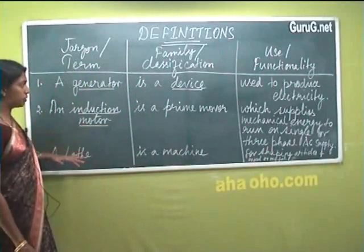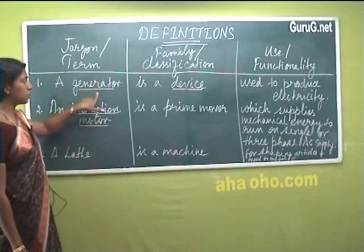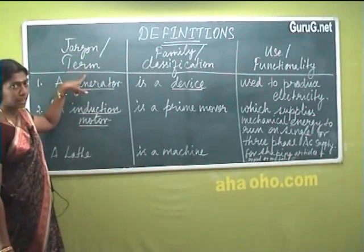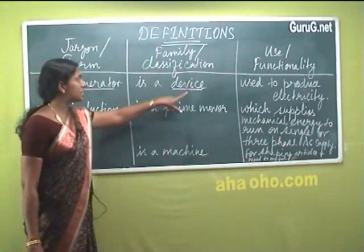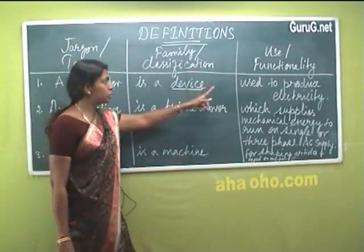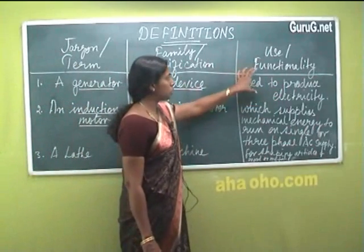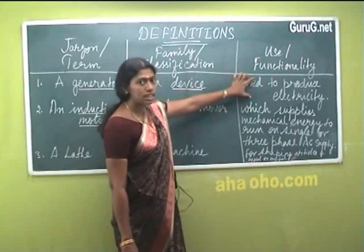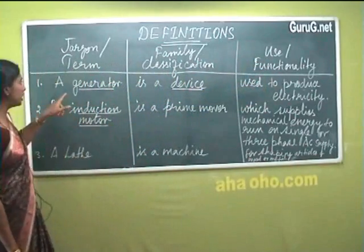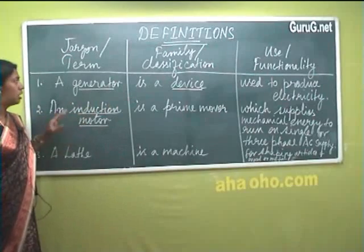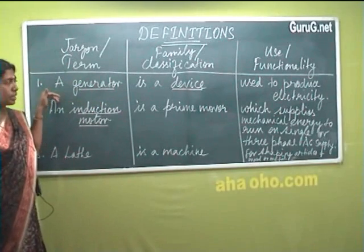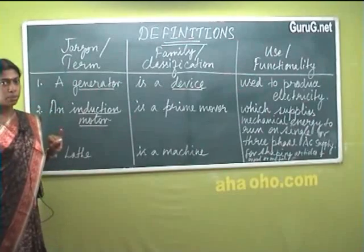Let us go through the examples. Let us take the word 'generator.' A generator — we have given the term here, which belongs to probably mechanical jargon. 'Device' is the classification; we are classifying this term. A generator is a device used to produce electricity. So I am giving the usage — for what the generator is used. A person who does not understand what a generator is will easily understand now, because we have given it in a single sentence as per the rules.